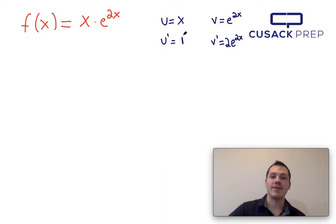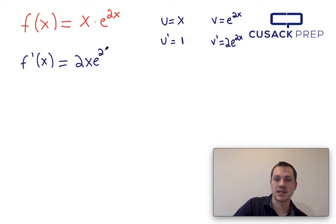So now that I have this, the product rule requires me to multiply this times this, u times v prime, and then add that to v times u prime. So my derivative of this function is going to be u times 2e to the x, which can be written as 2x times e to the 2x, and then I have to add that to these two multiplied by each other. So that's just gonna be plus e to the 2x.